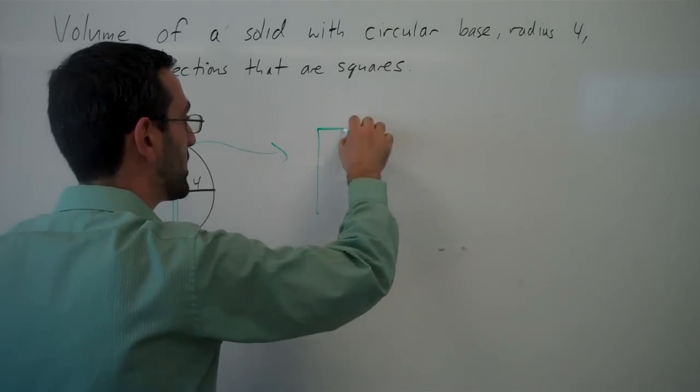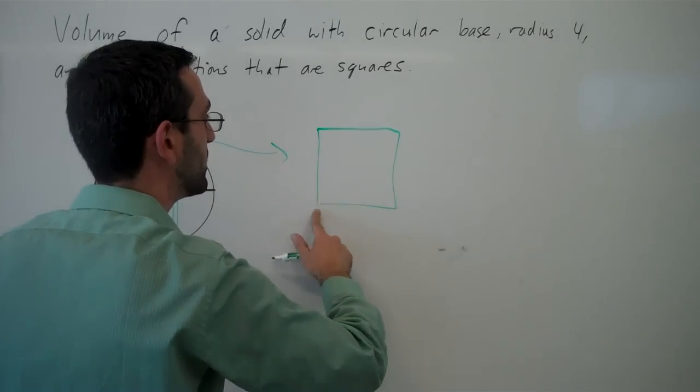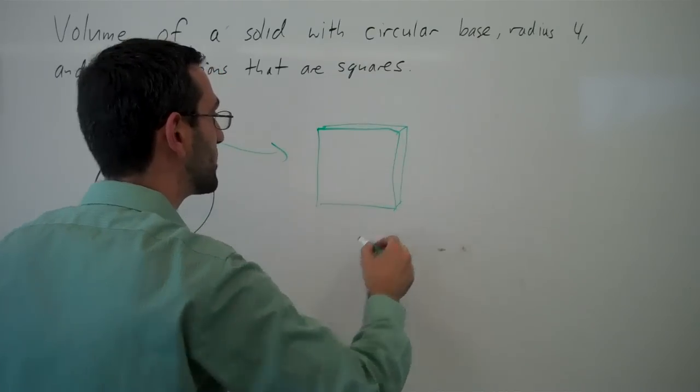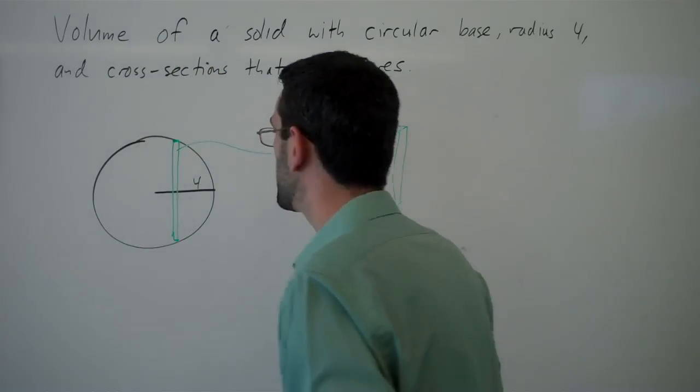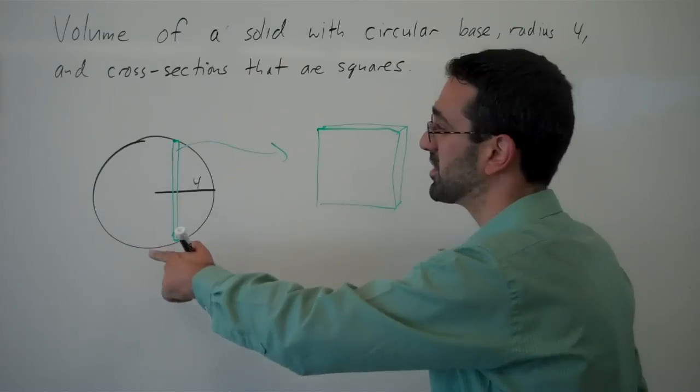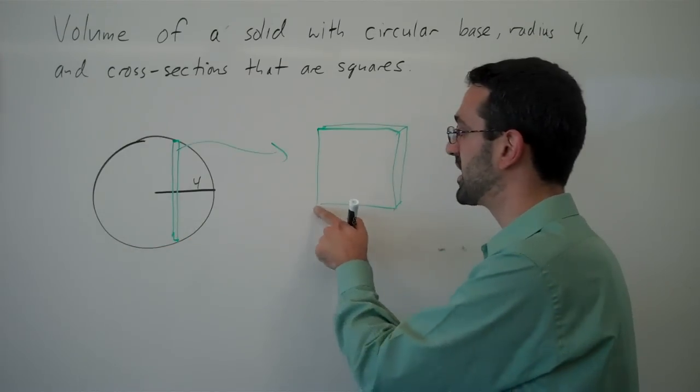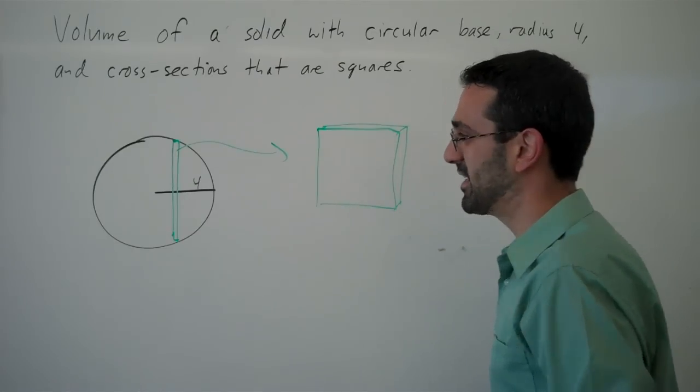we would get a square with a little bit of thickness, because we're going to imagine it's taking slices of volume here. So to find the volume of this whole solid, we're going to need to find the volume of one slice and then add it up.